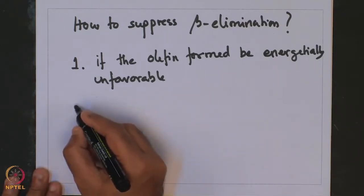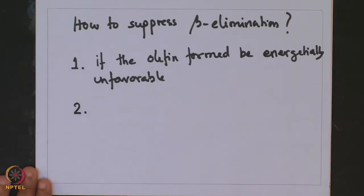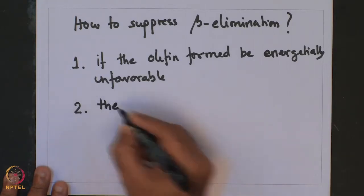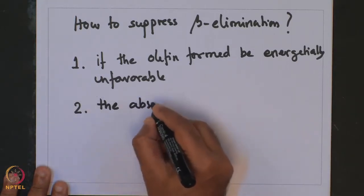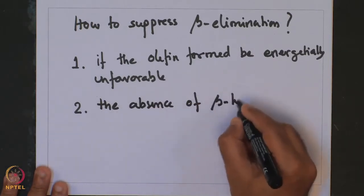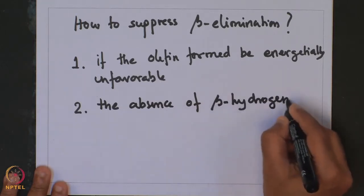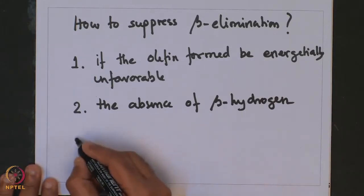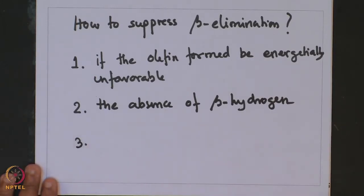Other strategies obviously include designing ligands. For example, if the ligand does not have any hydrogen in a beta position, probably beta elimination would never proceed. So the second strategy is about the absence of beta hydrogen. A third strategy involved a clever technique where beta elimination was suppressed because of coordinative saturation.